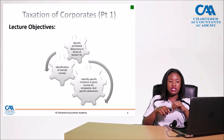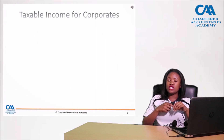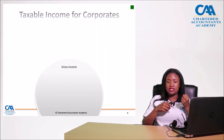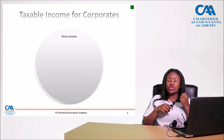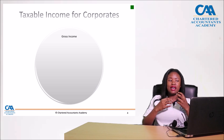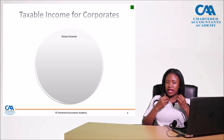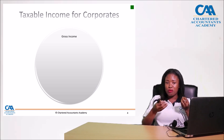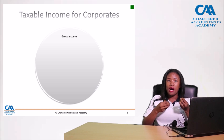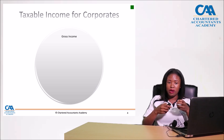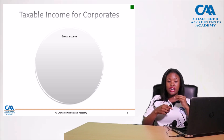We are going to start with specific inclusions. When calculating gross income, the general formula applies — gross income is amounts received by or accrued to a person in the year of assessment from a source within Zimbabwe, excluding those of a capital nature. This is the first part when you're calculating the income of a corporate.